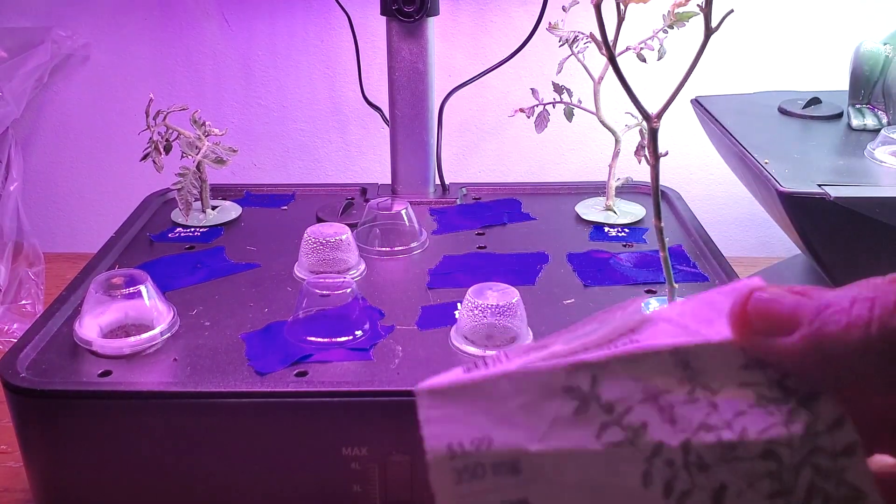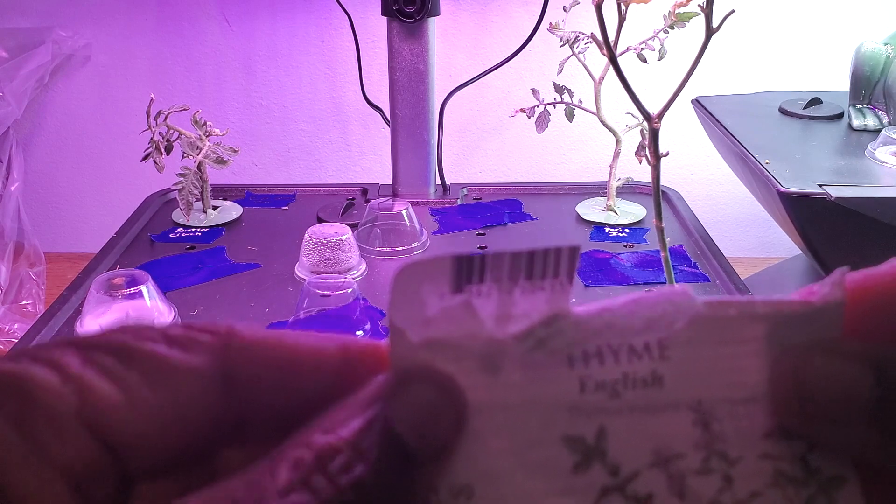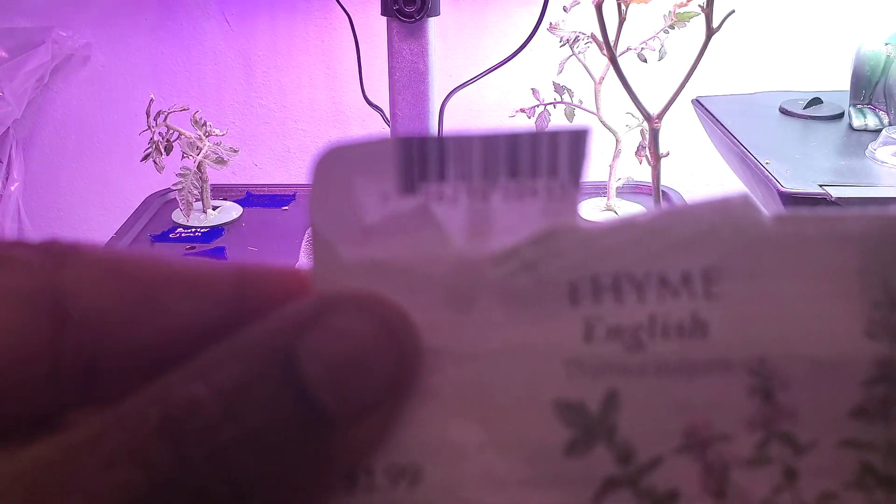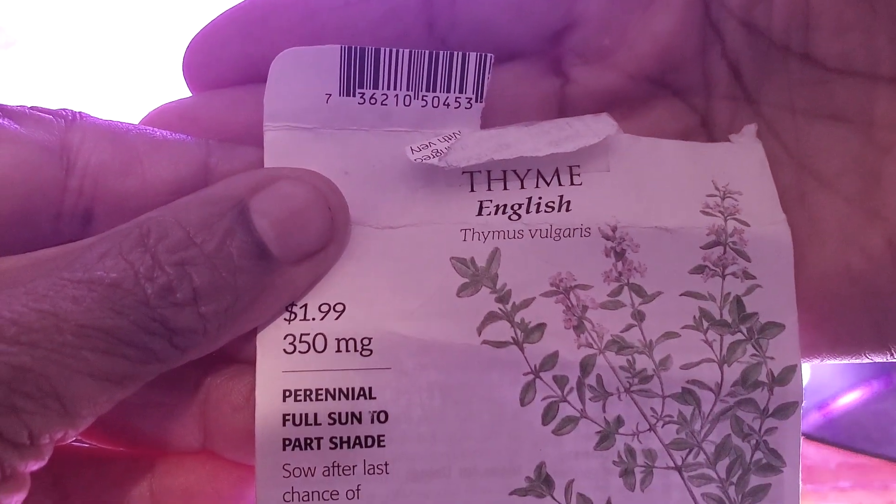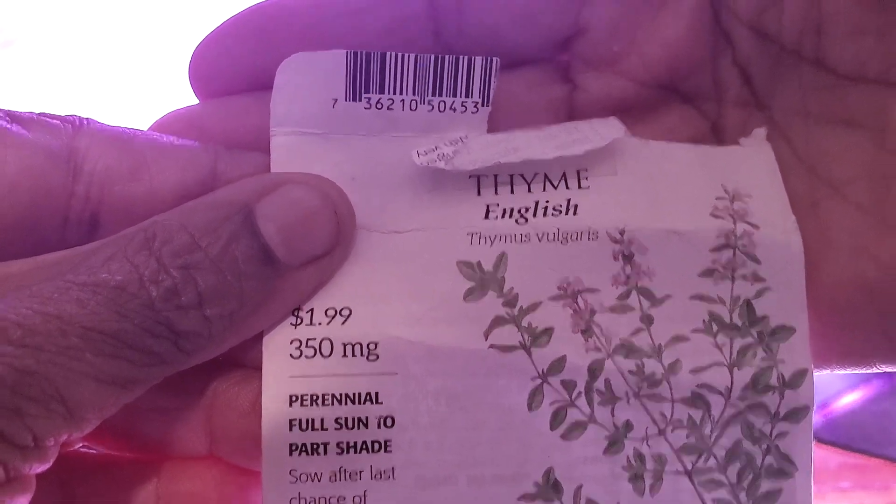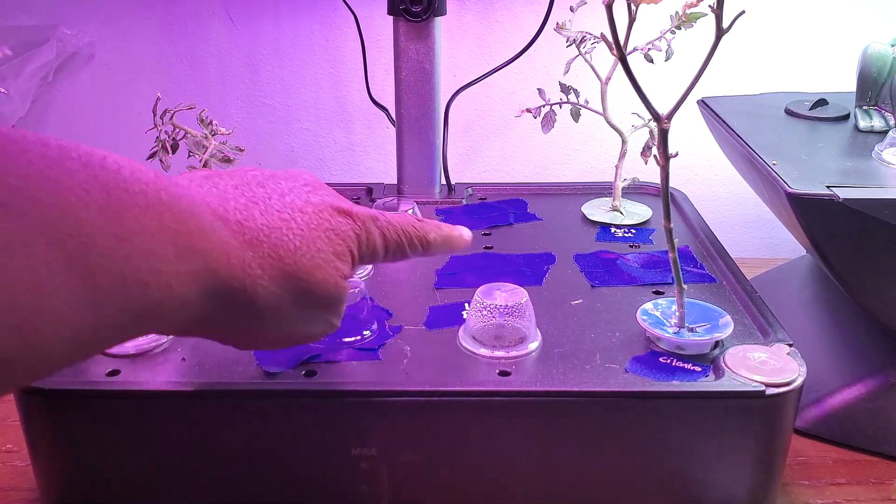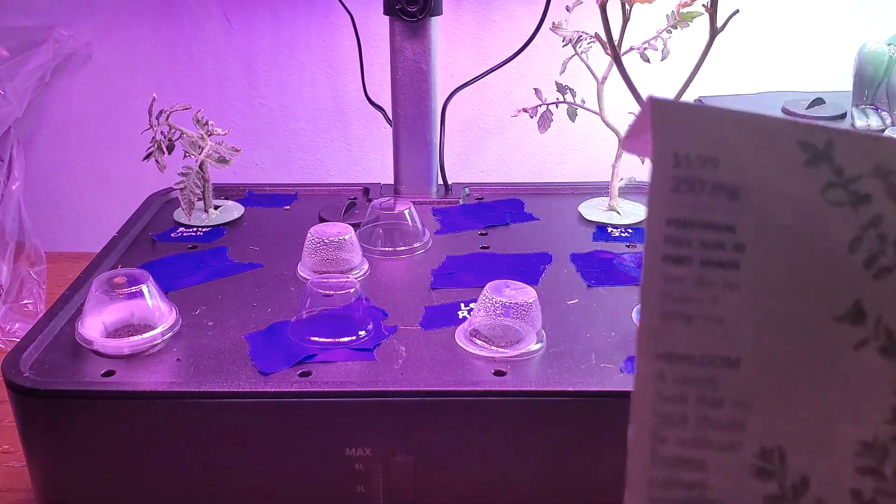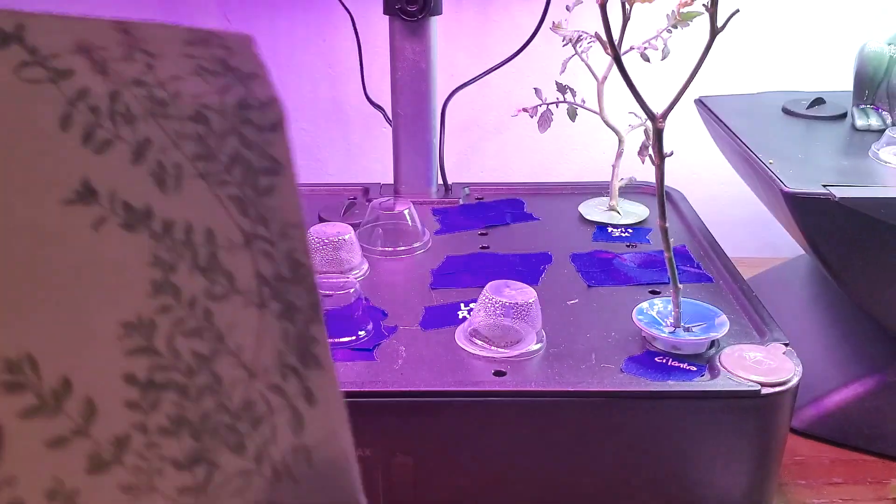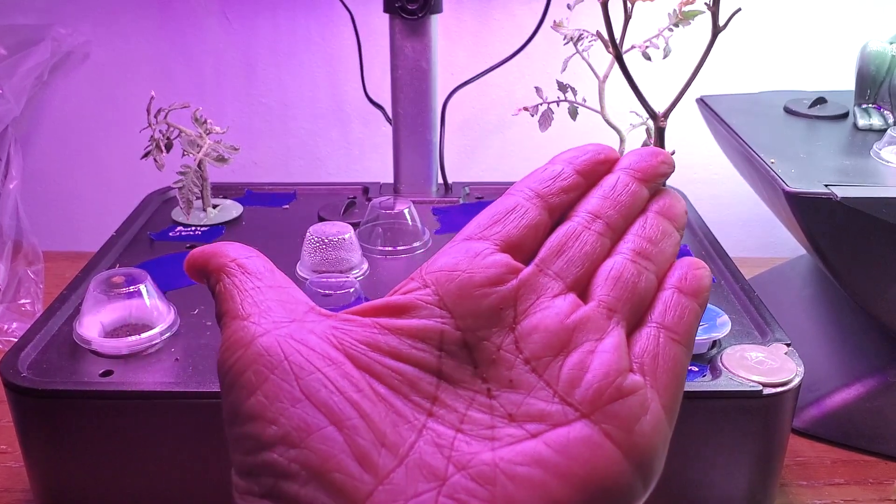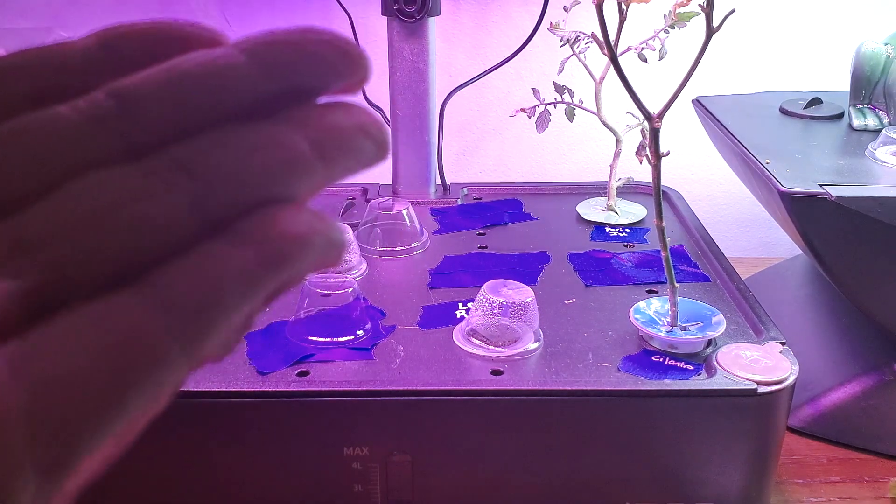And some English thyme. Can y'all see that? I can't see that myself. Come on camera, focus. Okay, there you go, English thyme. So I have three spots and I'm gonna plant those three in those three spots. Oh my goodness, you cannot see how tiny those thyme seeds are. I can't even see them. Those little specks, those are the thyme seeds. So anyway, I'm gonna plant those.